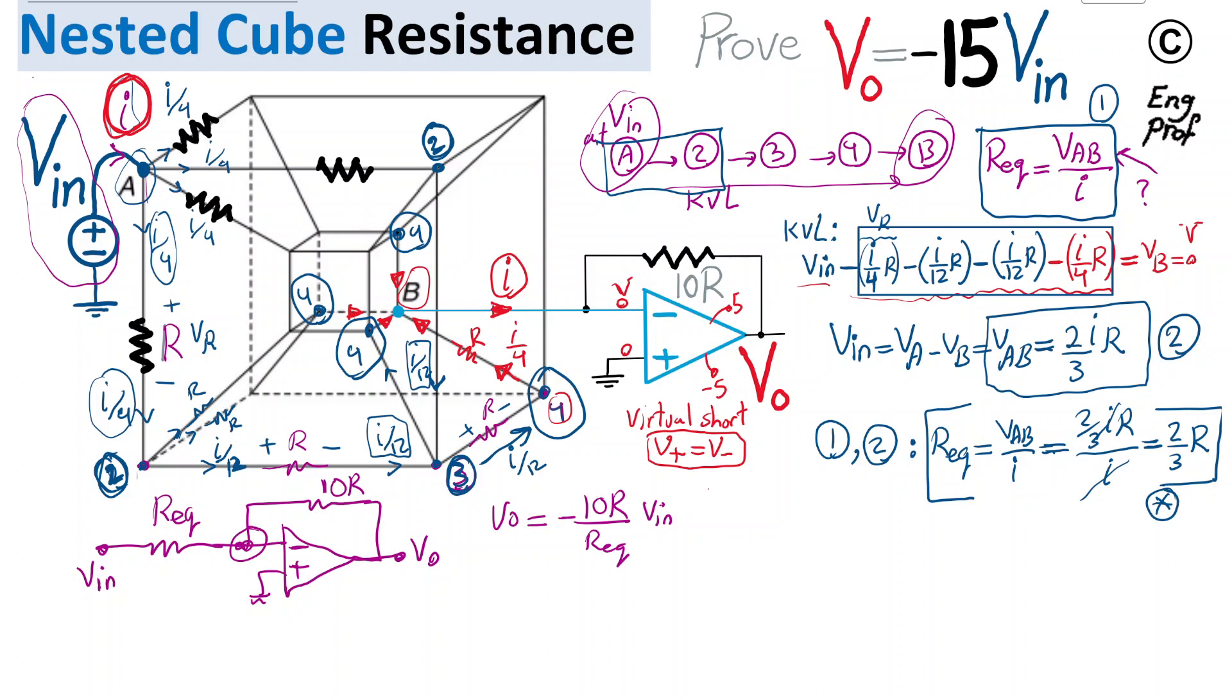As a last step, I am going to substitute that into the inverting amplifier gain. I get negative 10R divided by 2 over 3 times R, times V-in. We get rid of R—that cancels out. As a result, we get exactly the relation we wanted: minus 30 divided by 2, minus 15 times V-in. That's V-out. That proves exactly what we wanted to prove in this interesting circuit. I hope this example is helpful in terms of illustrating an interesting, unique nested cube or double-cube resisted network in an example that involves inverting amplifier and how we find the equivalent resistance for that.